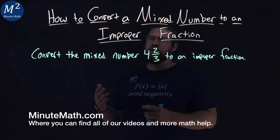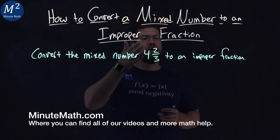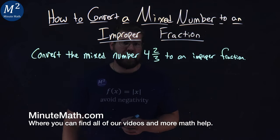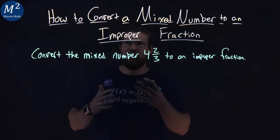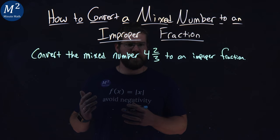We're given this problem here. Convert the mixed number four and two-thirds to an improper fraction. Well, this actually, once you know the rules of it, it's fairly simple.